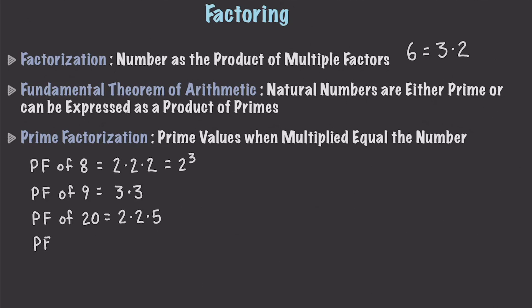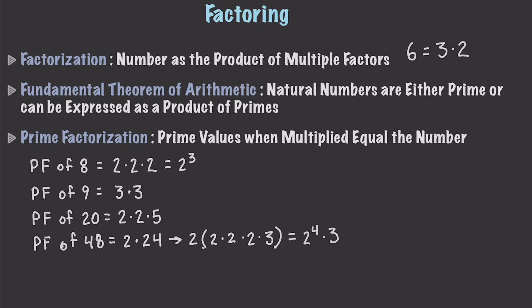Prime factorization of 48. We know 2 is prime, and 2 times 24 equals 48. We then figure out how to express 24 using primes: 2 times 2 times 2 times 3 gives us 24. So the full factorization is four 2s and a 3, giving us 2 to the 4th times 3. The prime factorization of 48 is 2 to the power of 4 times 3.